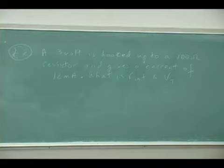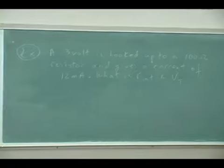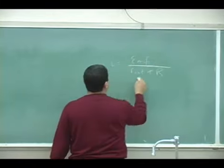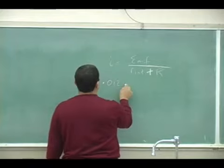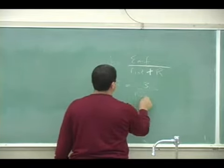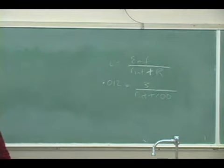So you can start the work there on your paper while I'm erasing this. I equals EMF over r int plus big R. So the current is 12 milliamps, 0.012, three volts, plus 100.